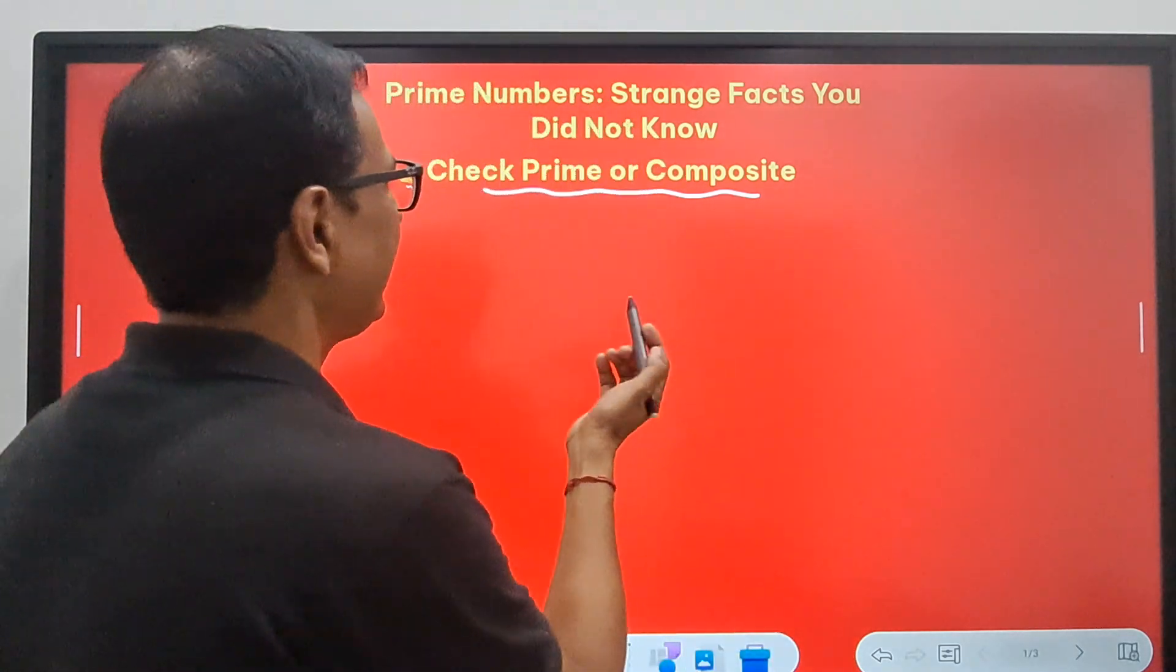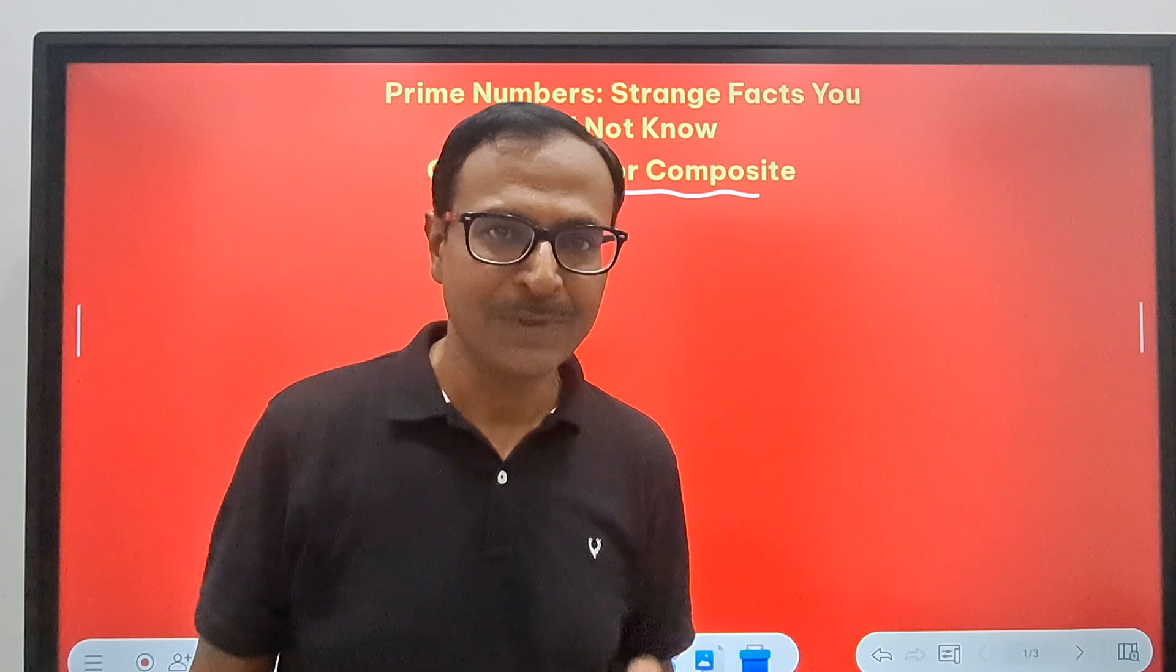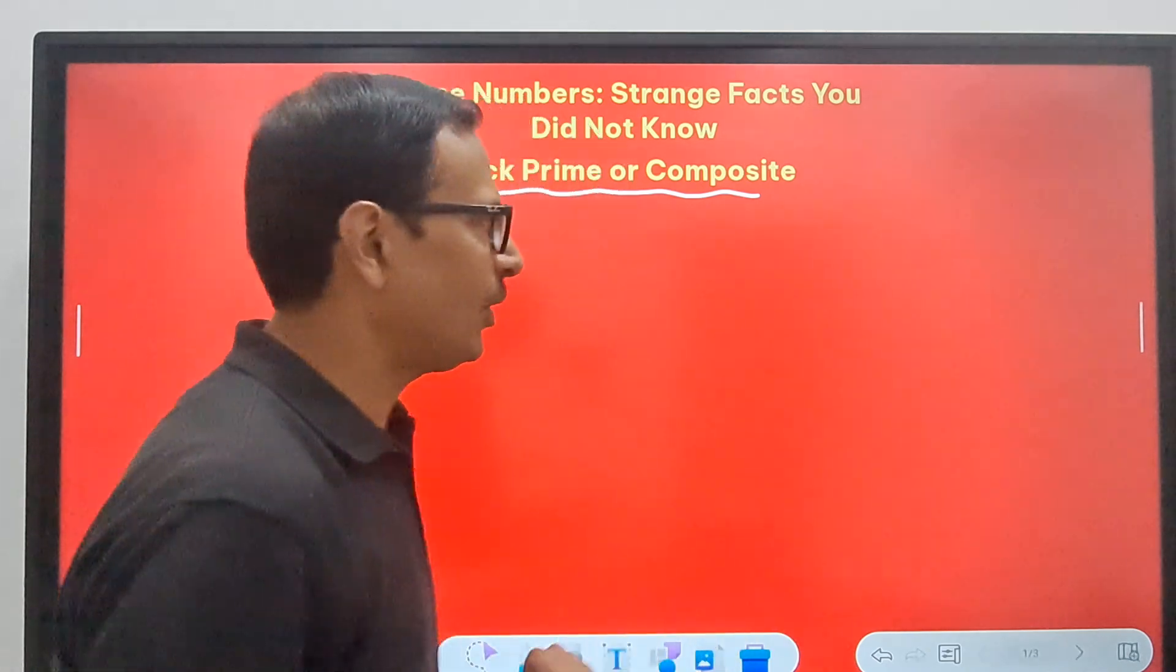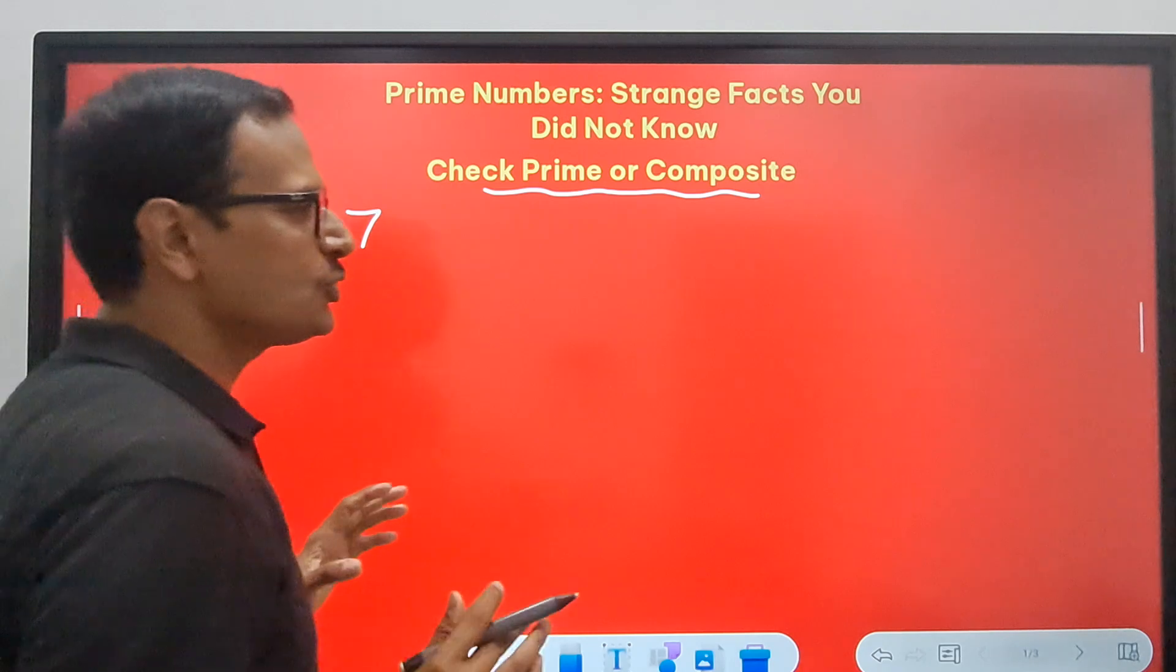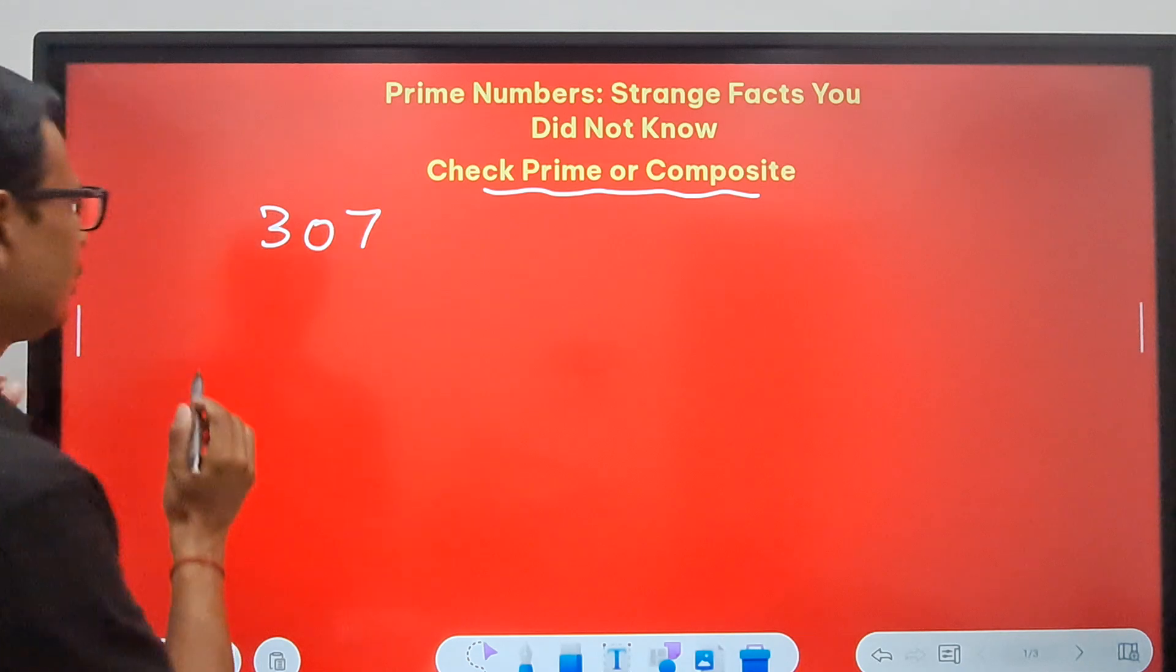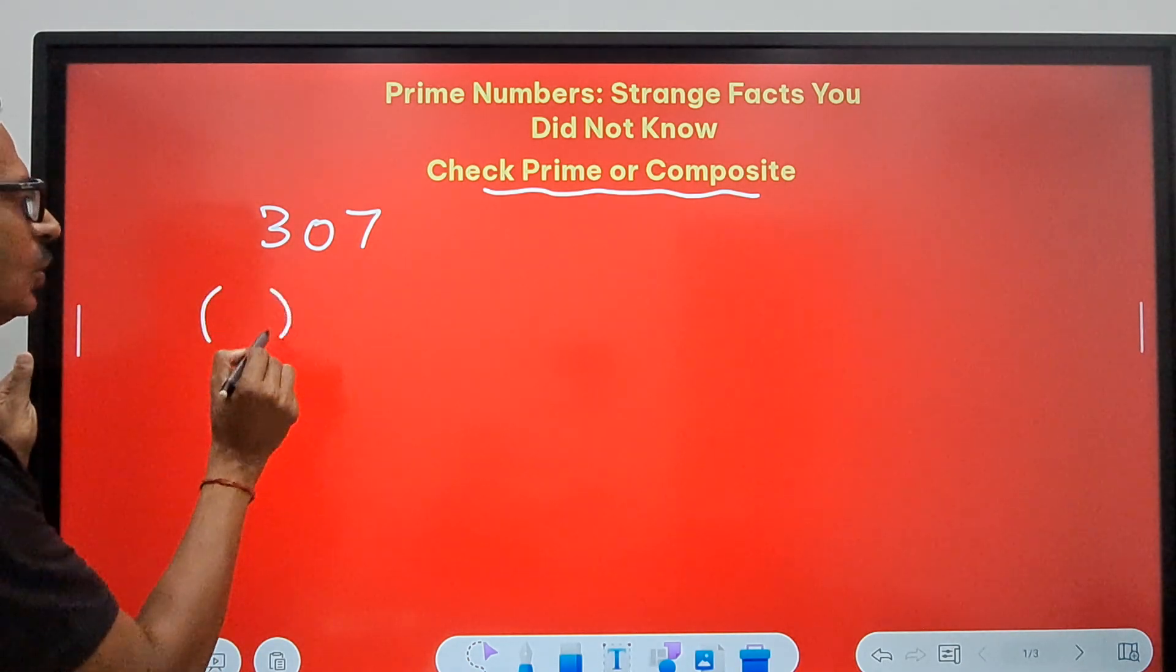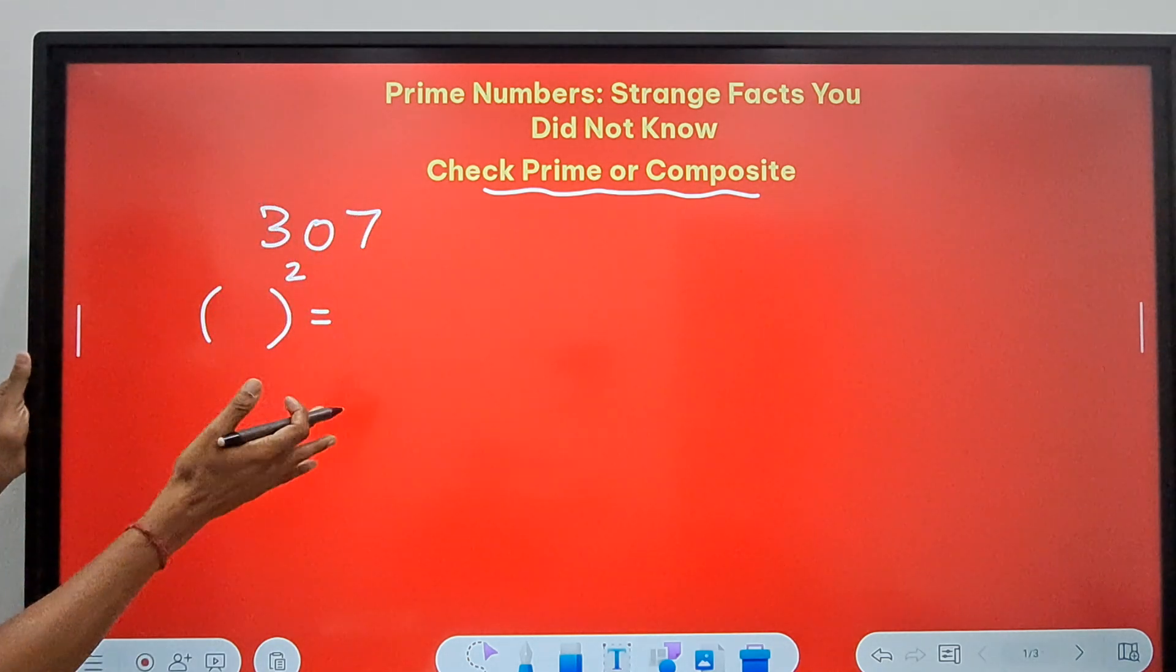So how do you find whether a particular number is prime or composite? Let's take a simple example of a number like 307. Now I want to check whether this number is prime or composite. So what I'm going to do is find a number whose square is just above 307.